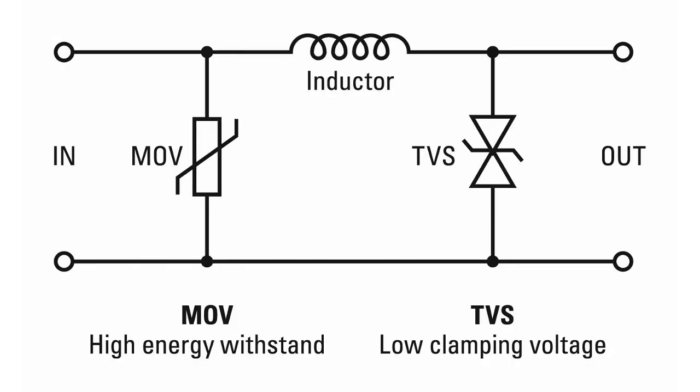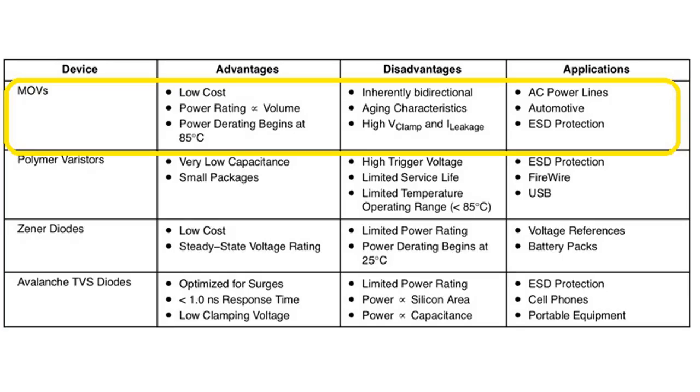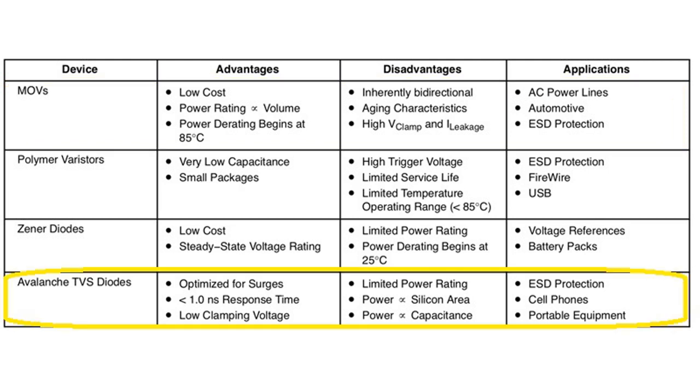Let's see the difference between MOV and TVS diode. MOVs are most often used on the power mains to protect downstream electronics and electrical equipment from direct and nearby lightning hits. Silicon TVS diodes are used extensively for protection across more sensitive data lines on telecommunication and microprocessor-based monitoring systems.